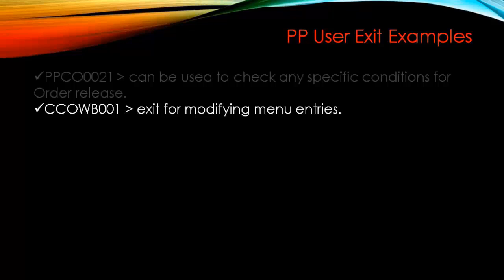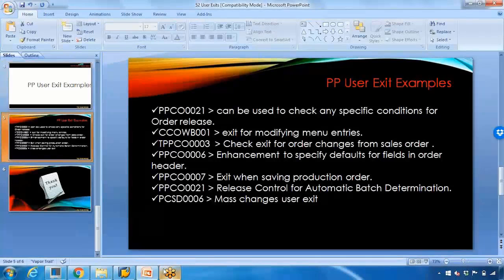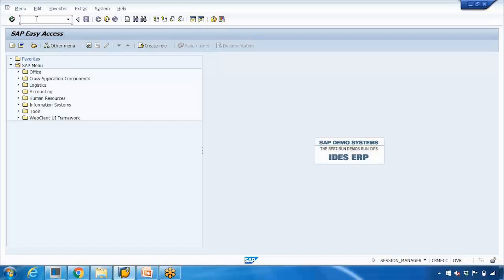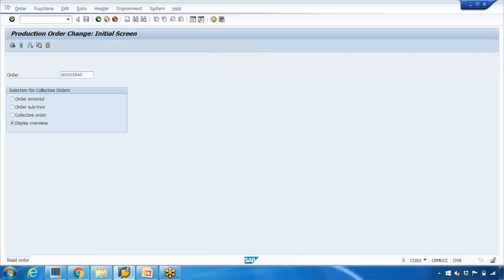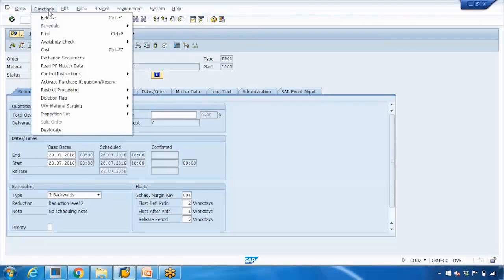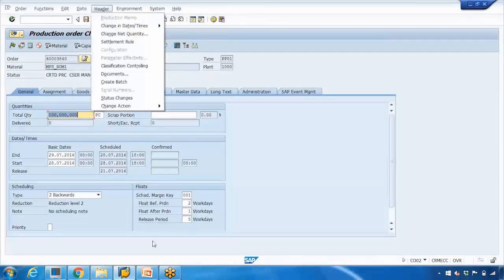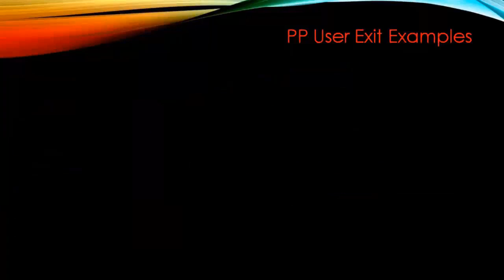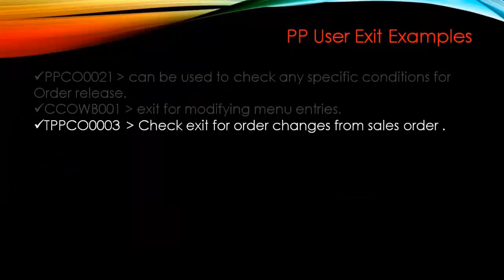Another example is a user exit for modifying menu entries. For example, when you open production order transaction CO2, the entries at the top are the menu entries — if you want to remove or add something there, you can use this exit. There is also a user exit to check for order changes from the sales order, so that any changes done in the sales order are reflected in the production order.